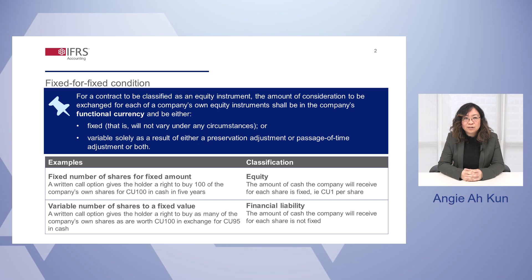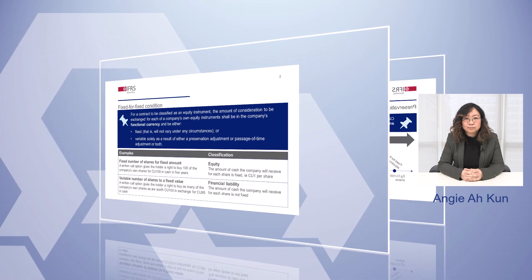However, the classification is not always straightforward because there are often adjustments to either the amount of cash or the number of shares to be delivered. To enable consistent classification, the ISP proposes two types of adjustments that would be consistent with the fixed-for-fixed condition.